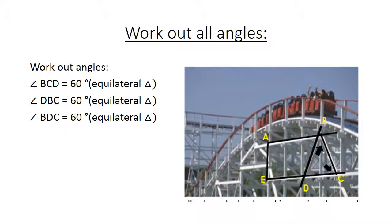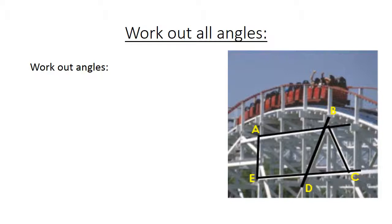Angle BDC also equals 60 degrees. Equilateral triangle. Now we're going to work out the angles. If we look at this picture again, we're going to work out the one with the arrow.